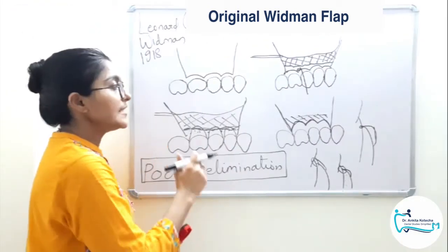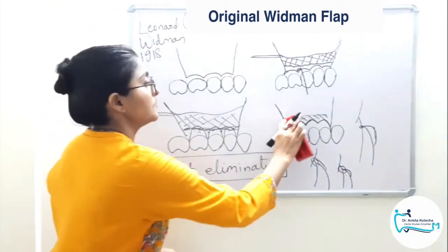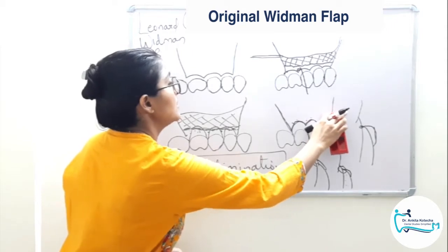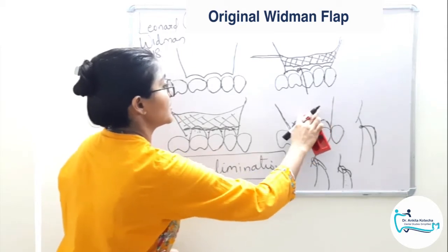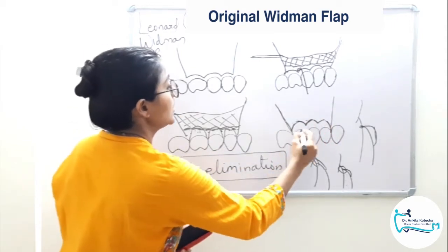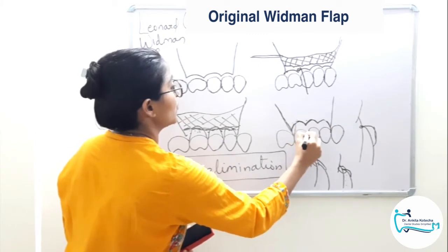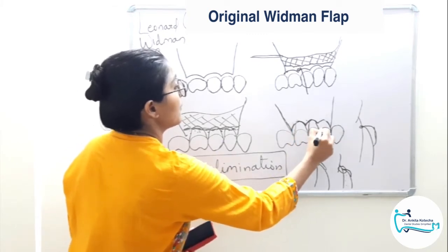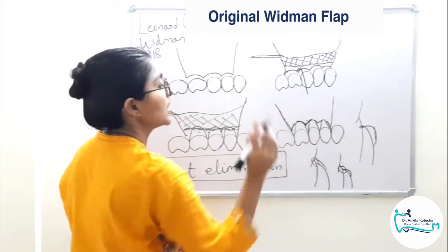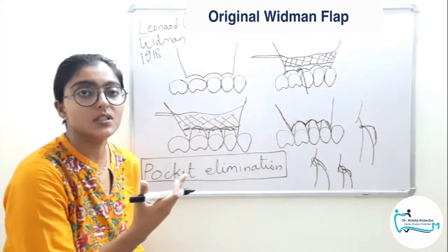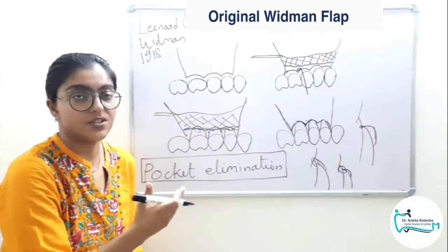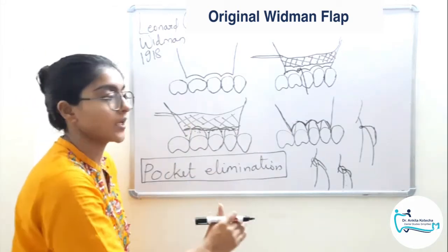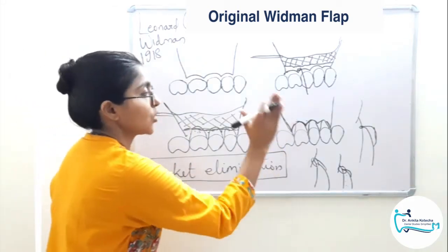So with this technique, this is the post-operative scenario. Because we have done bony recontouring and apical shift of the flap margins to coincide with the crest of the alveolar bone so as to eliminate the pocket, the post-operative scenario looks something like this.